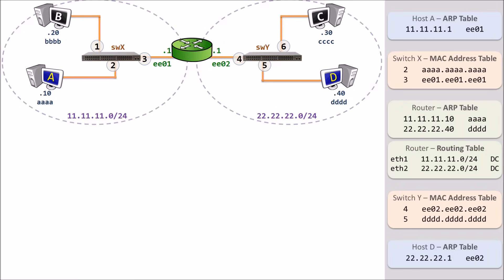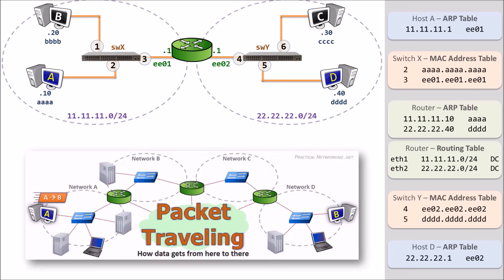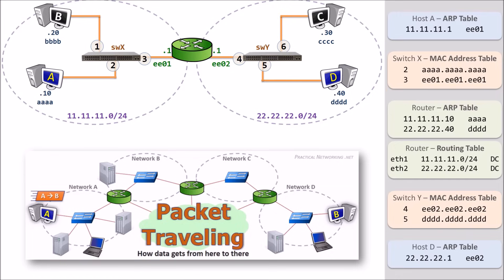And there you have it — all 30 steps needed to get data from Host A through a switch, a router, another switch, and finally to Host D, and all the way back again. For more details on anything we talked about in this video, check out the packet traveling series at practicalnetworking.net. You'll also find a bunch of other articles covering a range of topics in the computer networking and network security world. I hope this video is useful for you. If it was, consider sharing it with a friend. Thanks for watching.